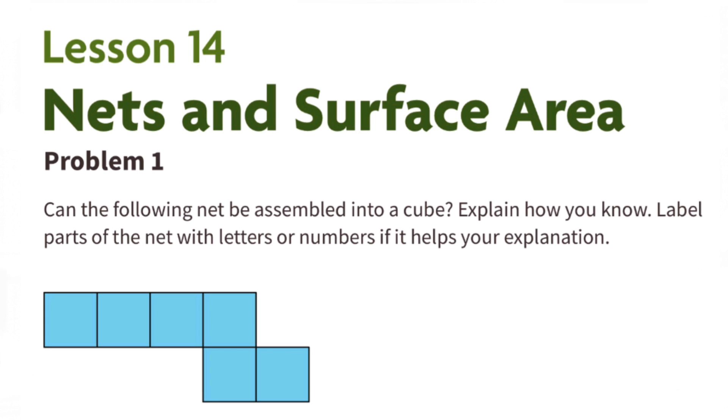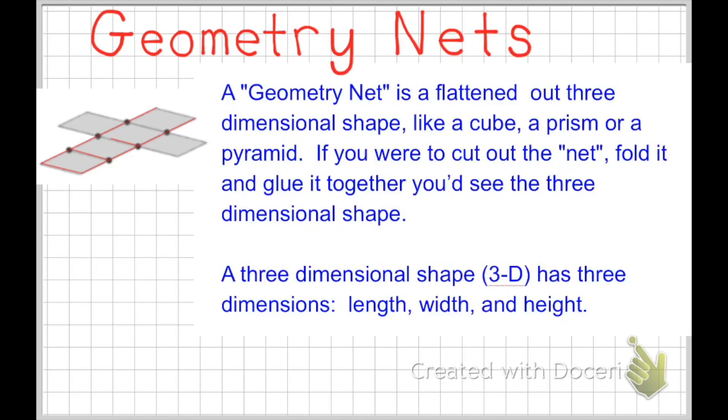For this lesson, it's important to know what a geometry net is. A geometry net is a flattened out three-dimensional shape like a cube, a prism, or a pyramid. If you were to cut out the net, fold it, and glue it together, you'd see the three-dimensional shape.